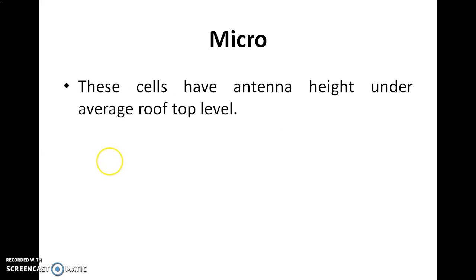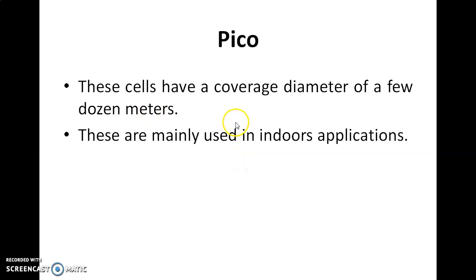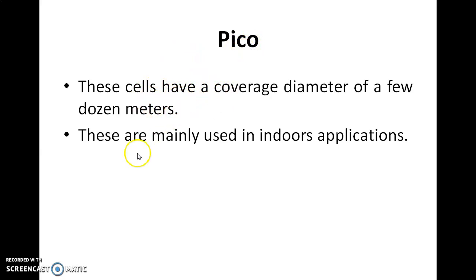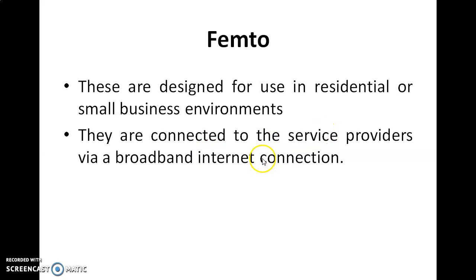Micro cells: these cells have antenna height under the average rooftop level — the height is less. Then pico cells: these cells have a coverage diameter of a few dozen meters in terms of coverage area. Pico is with respect to coverage area and is usually used in indoor applications.